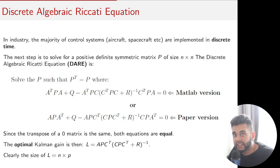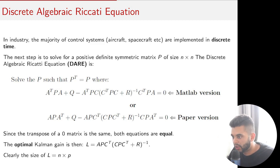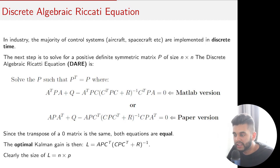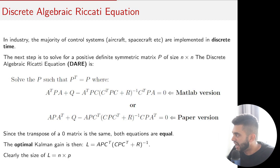Discrete time systems are very important and are used all the time in aviation, especially for digital control systems. Any control system in digital format will be discrete. In the discrete-time Riccati equation you solve for P, which is also a positive definite matrix. The optimal Kalman gain L is given by: APC-transpose multiplied by (CPC-transpose plus R) inverse. If you have the wrong Kalman gain, your filter will not be stable and will diverge. The size of L is n times p.